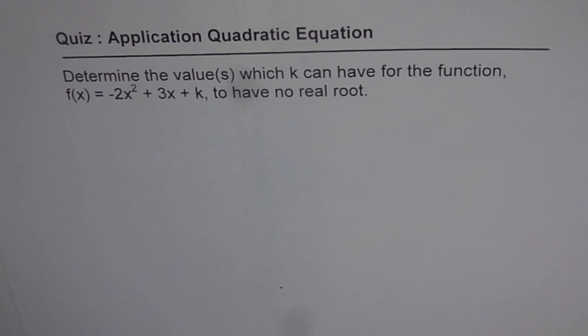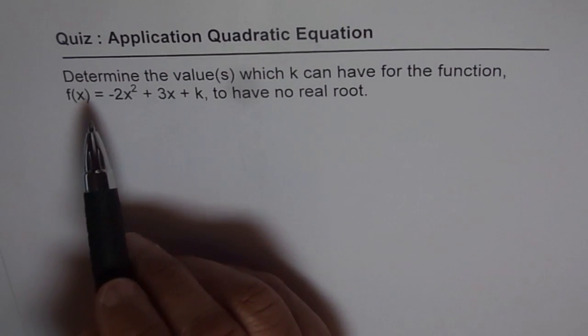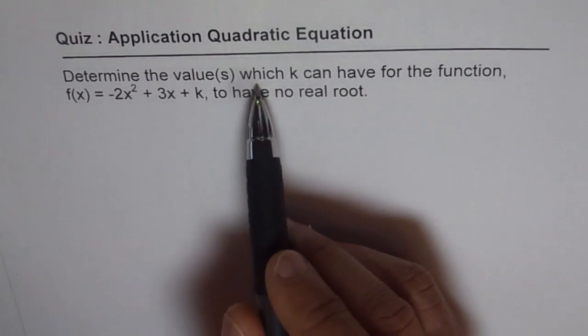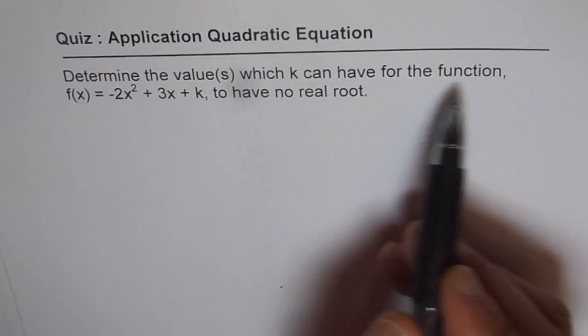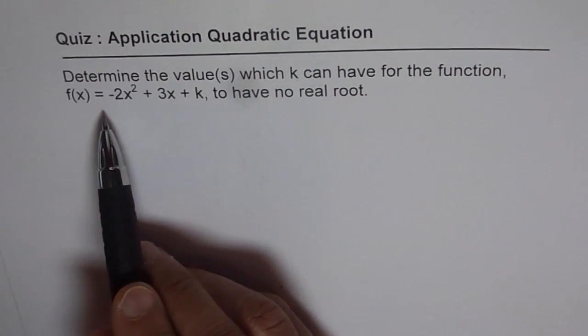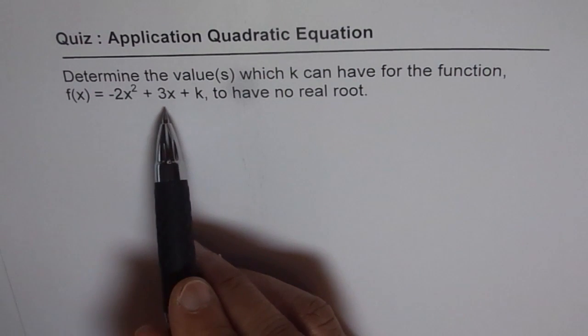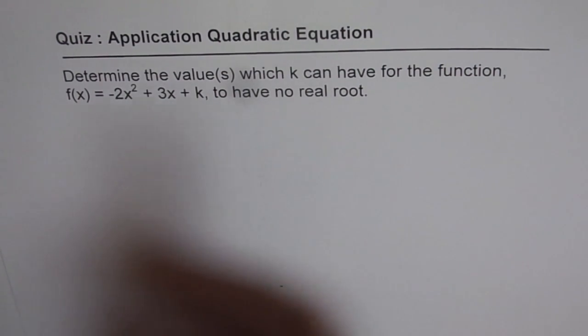These set of 15 questions will really help you and here we have a very simple but interesting question, question number 14, where we are going to use a part of quadratic equation which we call discriminant. And the question here is, determine the values which k can have for the function f(x) = -2x² + 3x + k to have no real root.